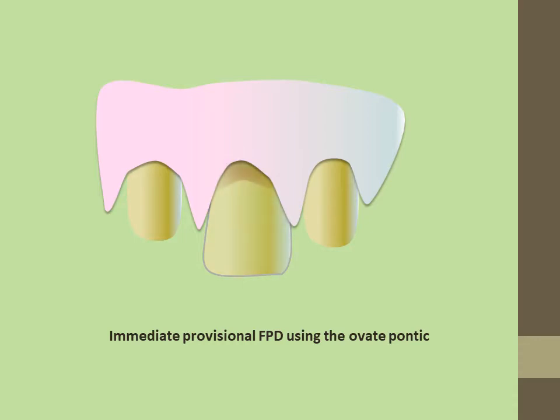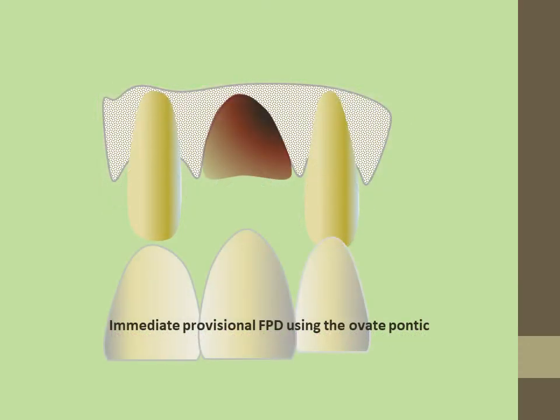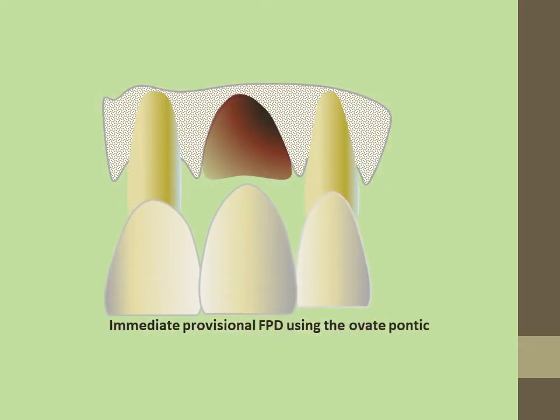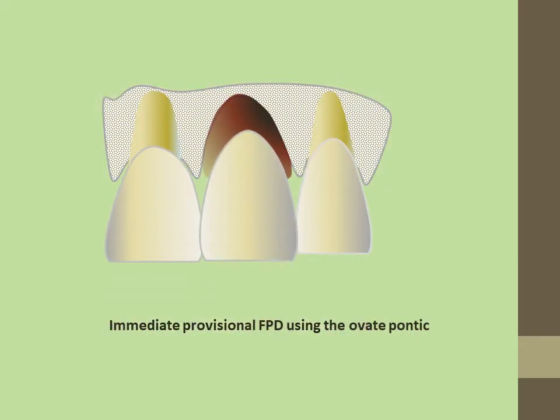Very often, an anterior tooth must be extracted and an immediate provisional restoration placed. The ovate Pontix, seen in the diagram, may be used to guide the healing process.